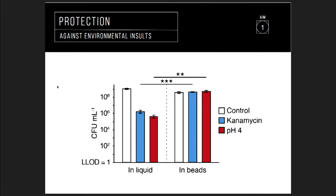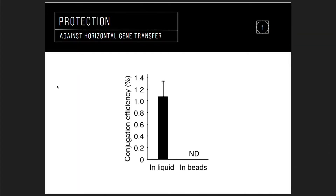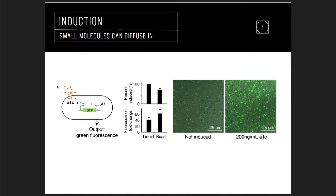The protection of the shell is not just mechanical — it also provides chemical protection against certain environmental insults. In this case, kanamycin, which is an antibiotic, and pH 4, which is a relatively low pH for E. coli. When the bacteria are in the beads they are much more resistant. Also, since there is a physical barrier, the microbes cannot interact with what's outside, so you can block all potential horizontal gene transfer between wild-type bacteria and our engineered strain. As a simple example, when the microbes sense the small molecule ATC, they turn fluorescently green in the gel.